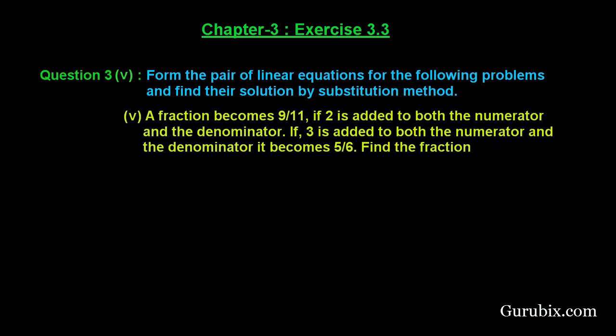Welcome friends, let us solve the fifth part of question number 3 of exercise 3.3 of chapter 3. The question says: form the pair of linear equations for the following problem and find their solution by substitution method. The problem is: a fraction becomes 9 over 11 if 2 is added to both the numerator and the denominator, and if 3 is added to both numerator and denominator then it becomes 5 over 6. Find the fraction.